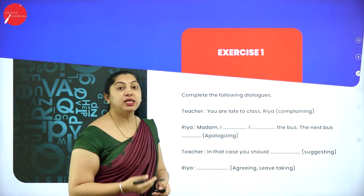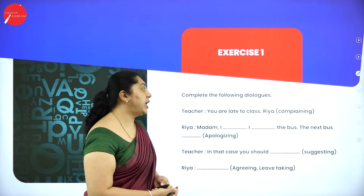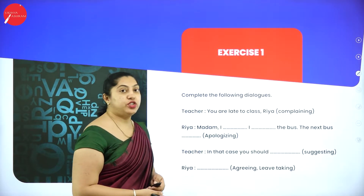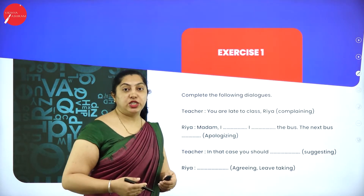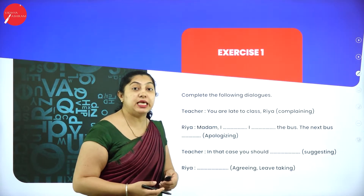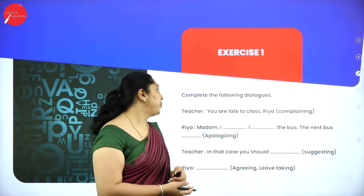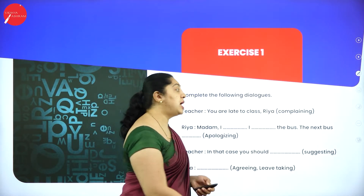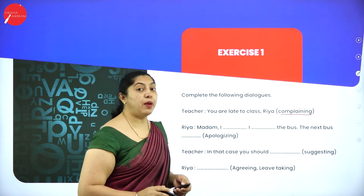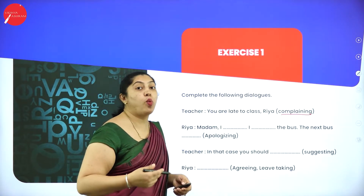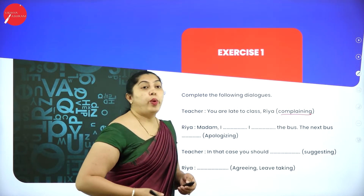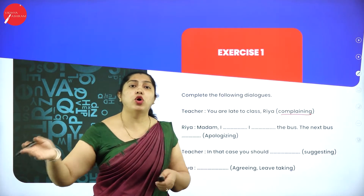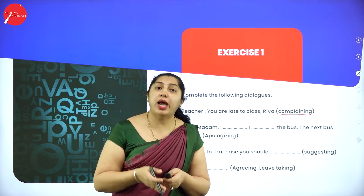Moving on to Exercise 1: complete the following dialogue. It is about a teacher and a student named Rhea. The teacher says: 'You are late to class, Rhea.' The teacher is complaining about Rhea being late. When asked why she is late, Rhea cannot be rude — she cannot say 'if you don't want me inside, I'll go.' She cannot walk out or be rude with the teacher. She should be very polite in answering.